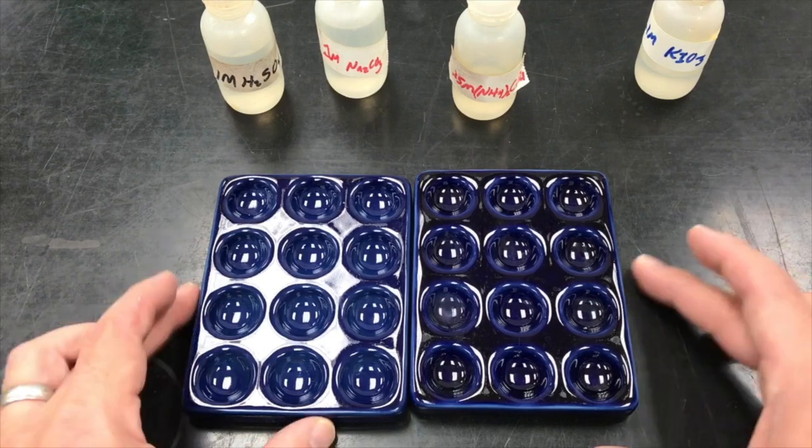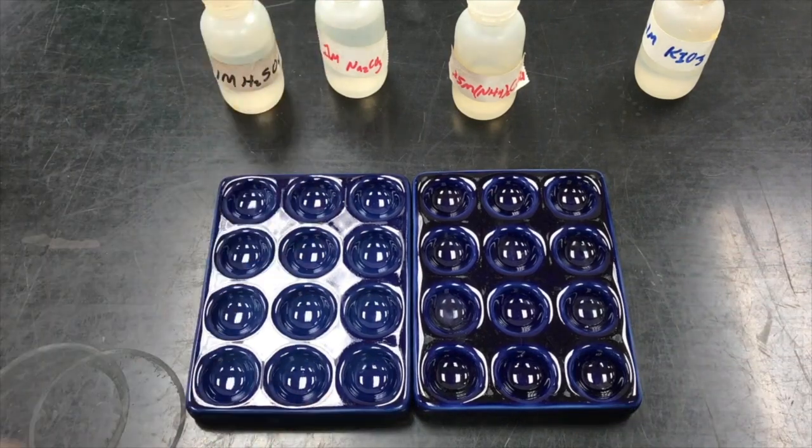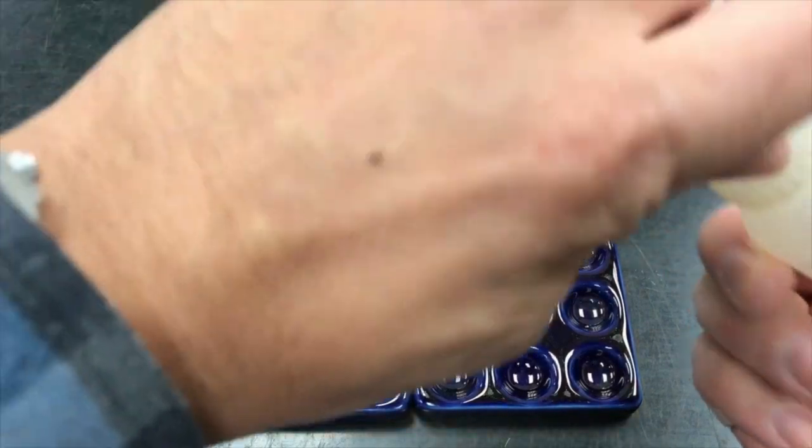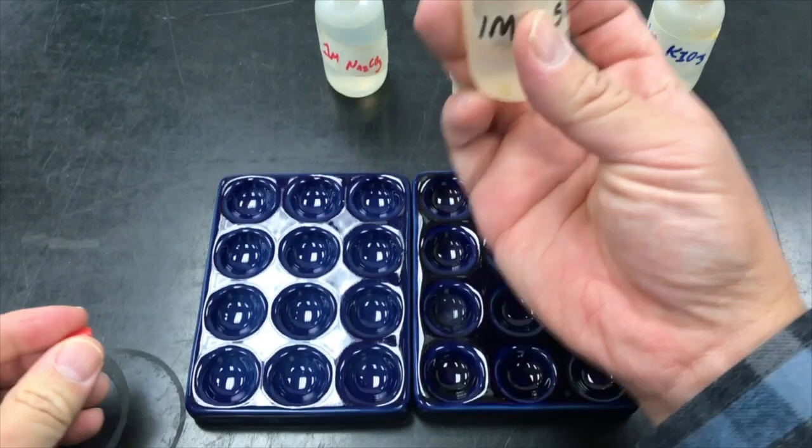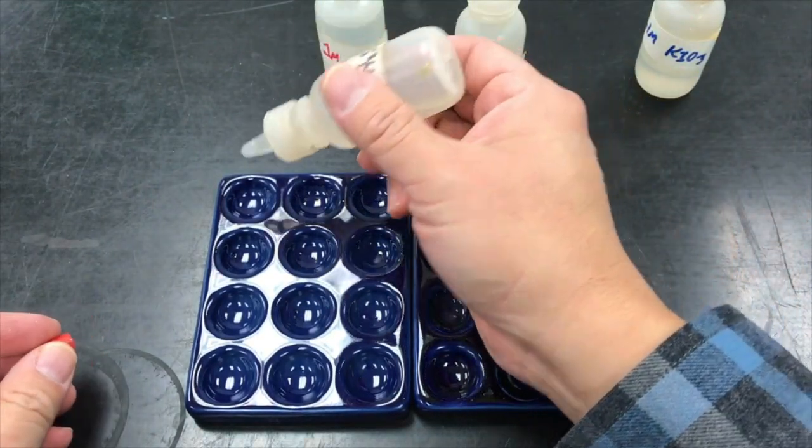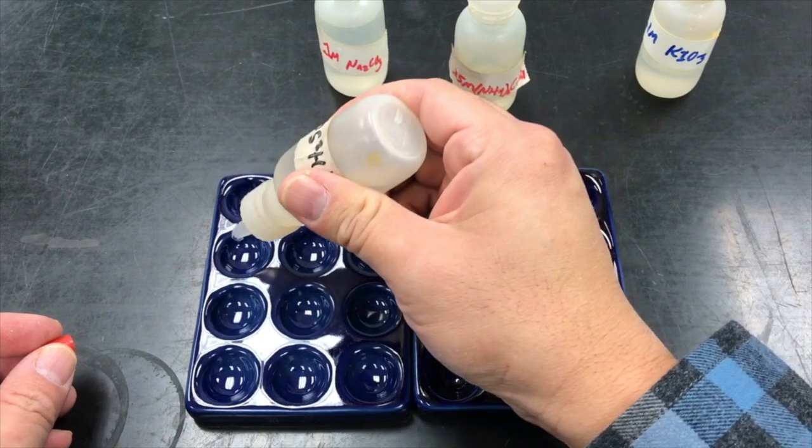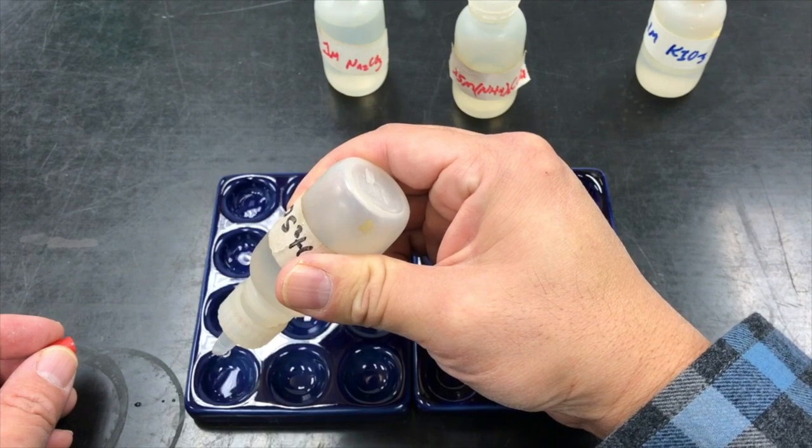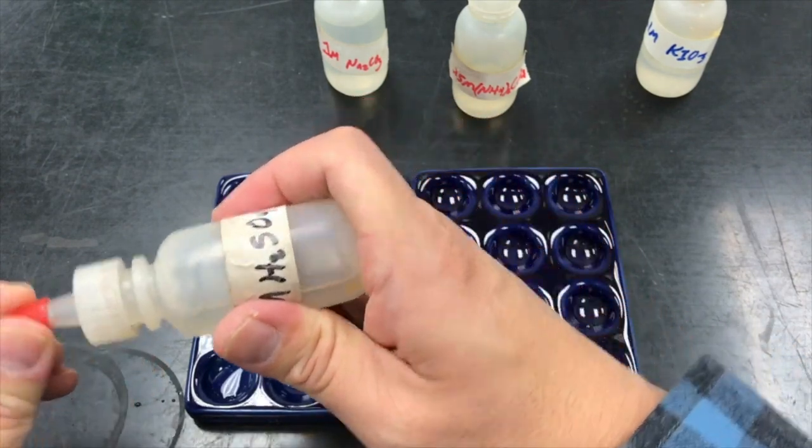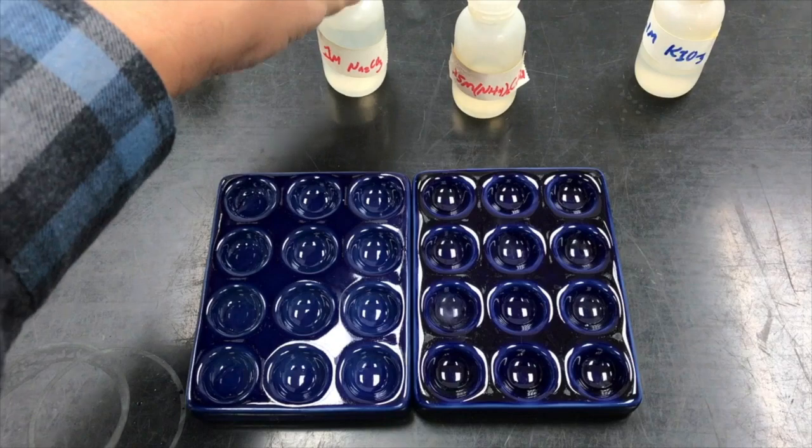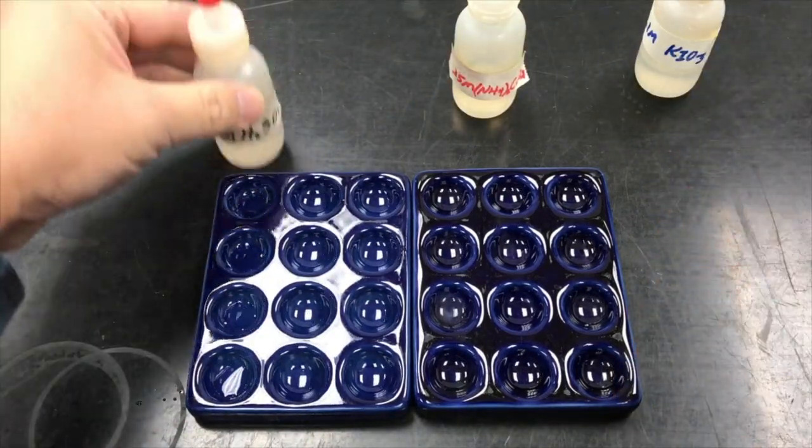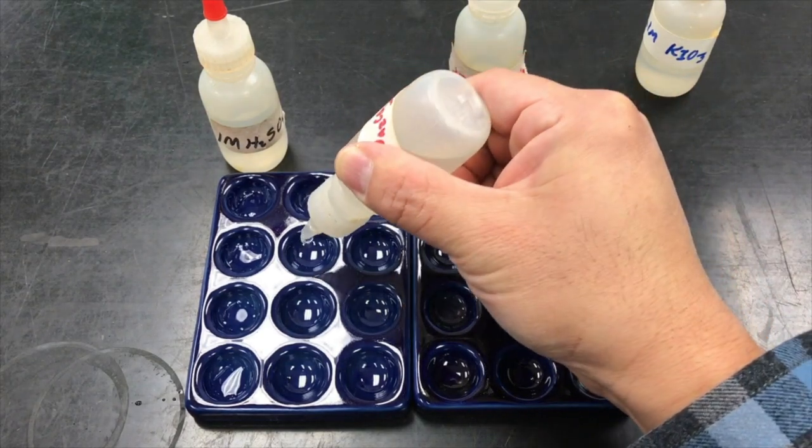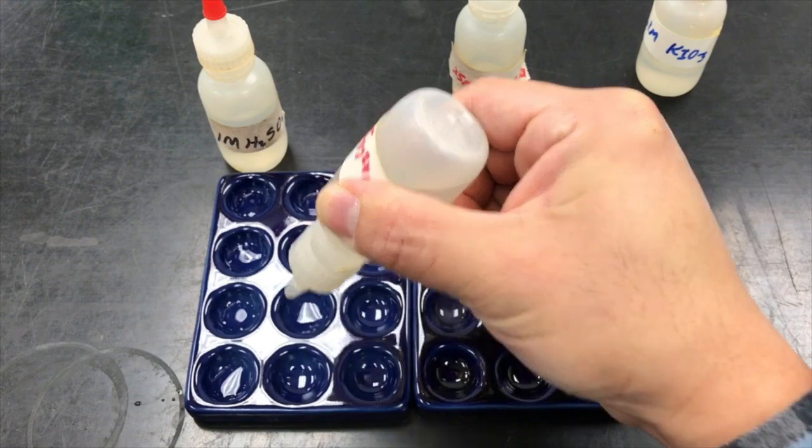I'm using these wells here, and we're just going to react them in a grid-like pattern. All we need to do is take a couple drops. So I'm going to start with the sulfuric acid and just down the row put three drops in each well. I'm just going to follow suit with each of these others.